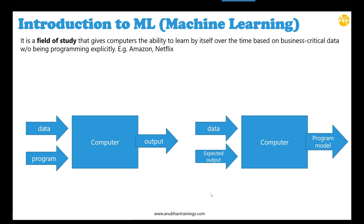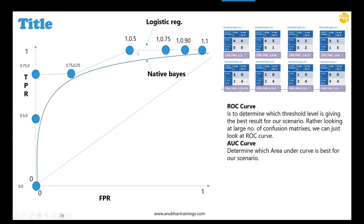Remember the terms predictive model or machine learning model. In Python this is represented using a special file type called PKL — so our goal will be to produce a PKL file. When you apply machine learning, you get a certain kind of plot, and by applying different algorithms you can compare which is best suited for your requirement. This is called your ROC curve.